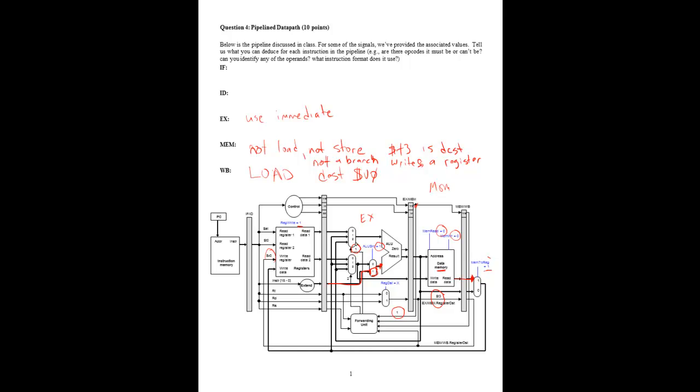We also note that it's forwarding into both multiplexers, so both of these multiplexers aren't zero. In the first case, it's one, and so that means it's pulling the operand which is the one being written in the write back stage. So we know the first source, we know RS, is whatever was being written, which is V0.